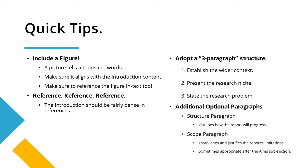Thirdly, if you're struggling with how to structure your introduction, think about the three-paragraph structure. Don't take that too literally — three paragraphs doesn't mean exactly three paragraphs, but three should be the minimum. Establish the wider context in your first paragraph, then present your research niche — what you're specifically focusing on — in your second paragraph, and then state the research problem you're going to tackle in the third. So start wider, maybe with authentication methods, then present the research niche like the use of passwords, and then thirdly, why passwords are bad and need to be fixed.